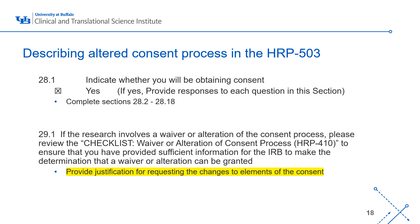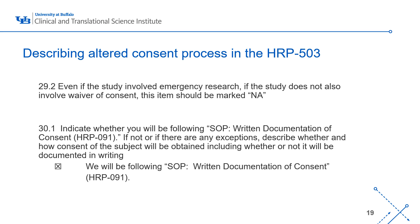In Section 29, Subsection 29.1, if the research involves an alteration of consent, you must provide your justification for requesting changes to the elements of consent — similar to the waiver of consent, but you must also include a debriefing process in your answer. All the same criteria from the HRP 410 checklist apply. Subsection 29.2 again involves emergency research and can be marked 'not applicable.' For Section 30.1, since you are obtaining consent, you will likely choose the box indicating you will follow SOP written documentation of consent, HRP 091.